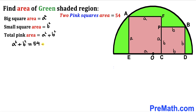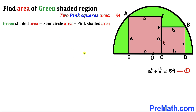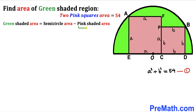I'm going to label this equation number 1. Now let's make an observation: the area of the green shaded region equals the area of the whole semicircle minus the pink shaded area. Since the pink shaded area is 54, our only remaining task is to calculate the area of this semicircle.